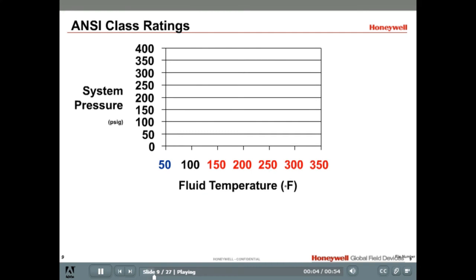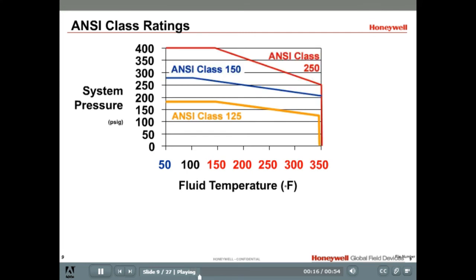All the Honeywell globe valves are ANSI class valves. ANSI refers to the American National Standards Institute. The ANSI class rating for valves can be 125, 150, 250, or even above. These different class ratings refer to the range of pressure and temperature levels that the valve body, including the flanges and fittings, must meet.